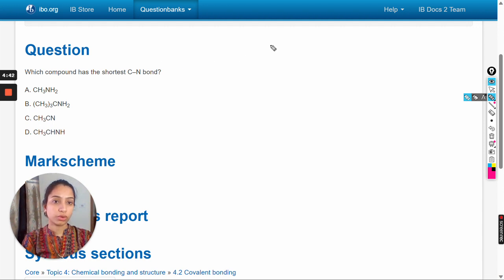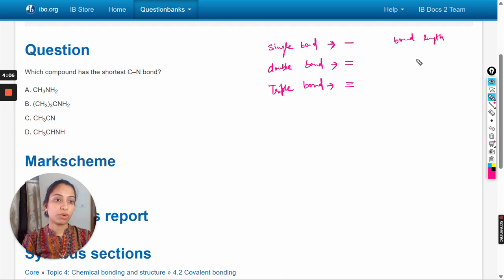We know that covalent bonds are of three types: single bond, double bond, and triple bond. For single bond we represent with a single line, for double bond we draw two lines, for triple bond we draw three lines.